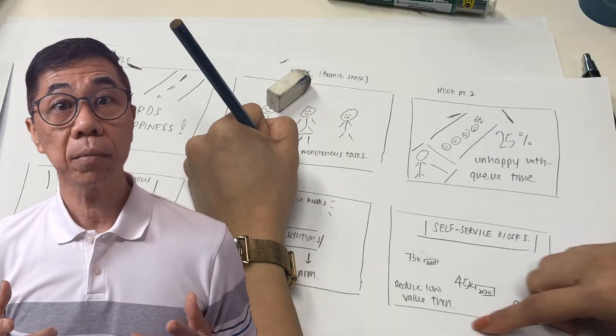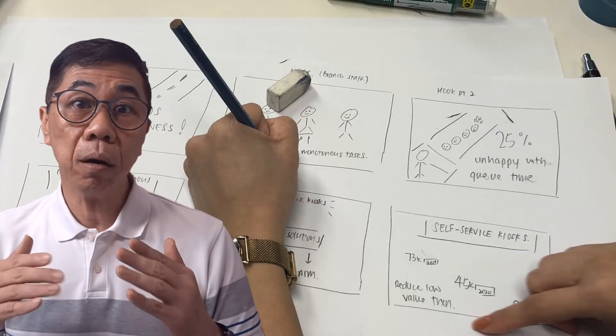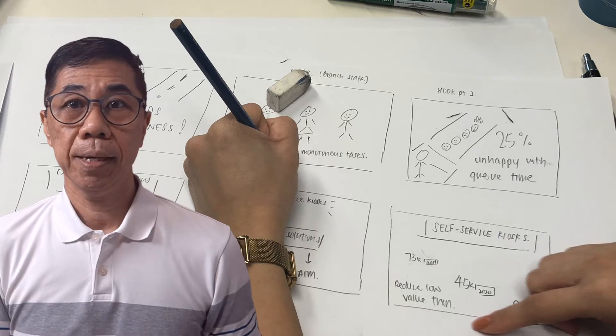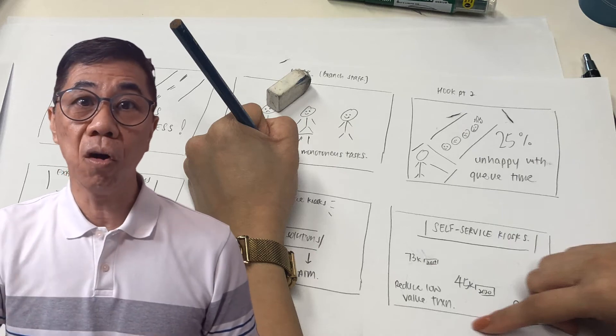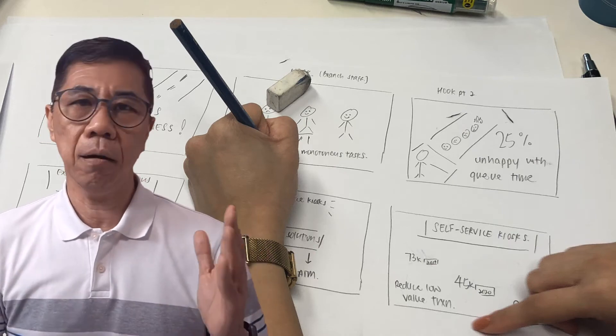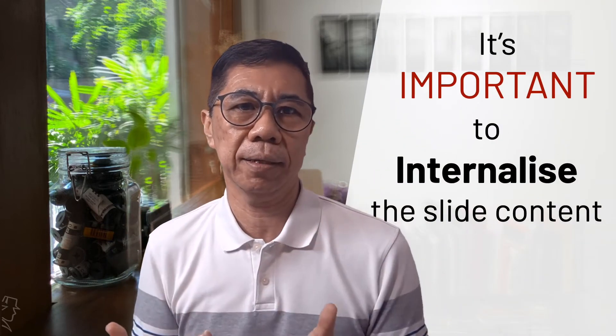With a storyboard, we work on a blank piece of paper and draw our ideas with pen or pencil. This ensures that we transfer our ideas directly to the free area of the piece of paper, forming the content that is needed. While working on the storyboard, we are also directly internalizing the slide content.